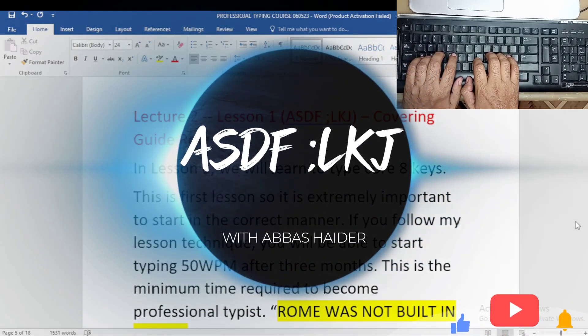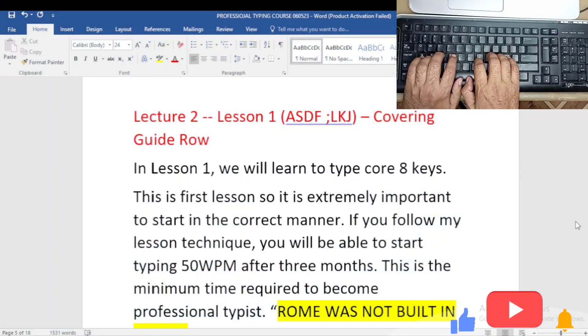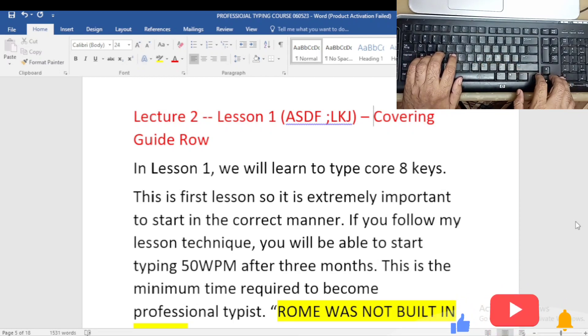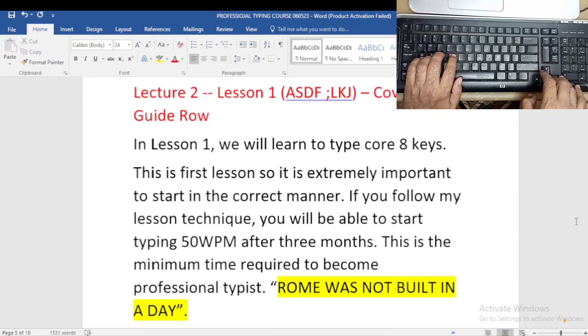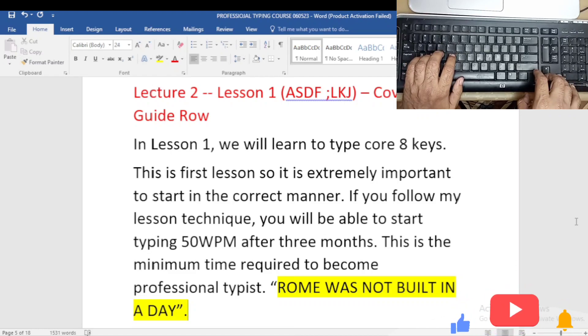In Lesson 1, we will learn to type core 8 keys. This is the first lesson, so it is extremely important to start in the correct manner. If you follow my lesson technique, you will be able to start typing 50 words per minute after three months. This is the minimum time required to become a professional typist.